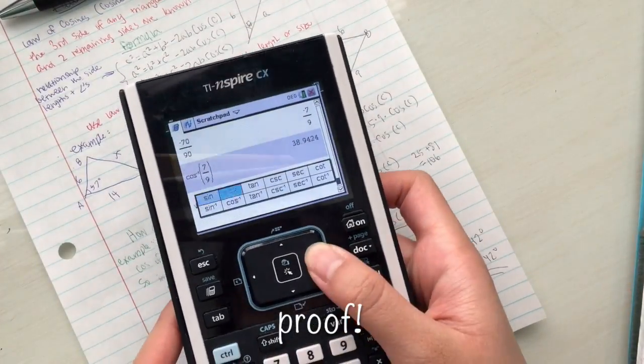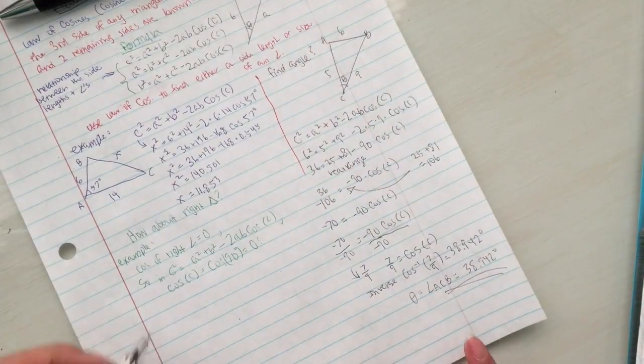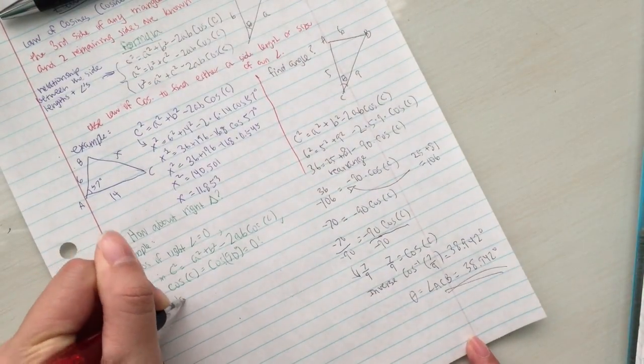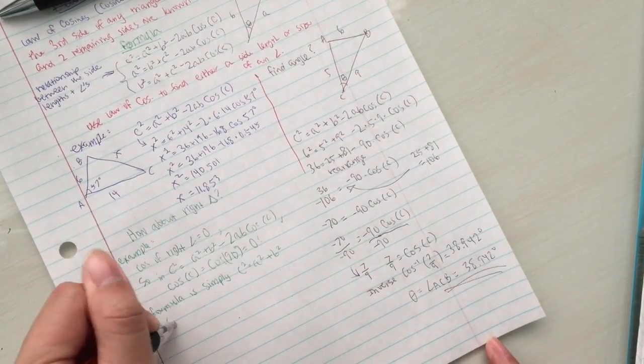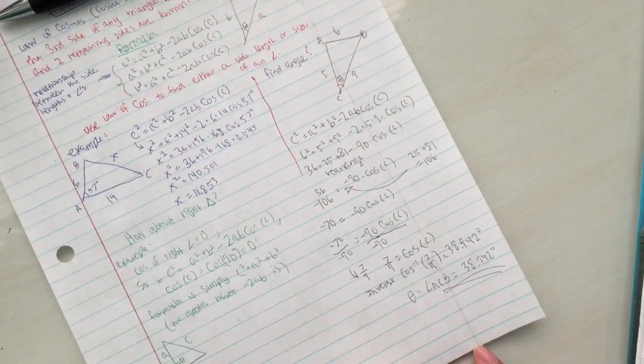So no matter what negative 2ab is, you will always get negative 2ab times cosine of 0 equals 0. So the formula is simply c squared equals a squared plus b squared, which is the formula for Pythagorean theorem.